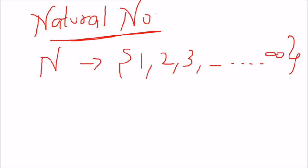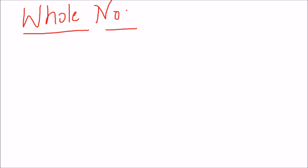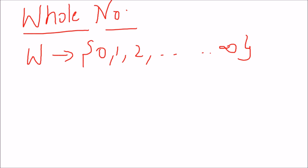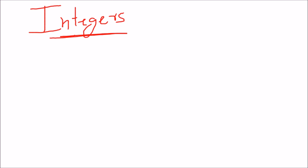Now coming to whole numbers. The basic definition of whole numbers is that it is the natural numbers plus zero. The set of whole numbers includes zero, which was missing in the case of natural numbers. We use capital W for denoting whole numbers. The difference is we just added zero to the natural numbers. Again, there is no decimal and no fraction in whole numbers.